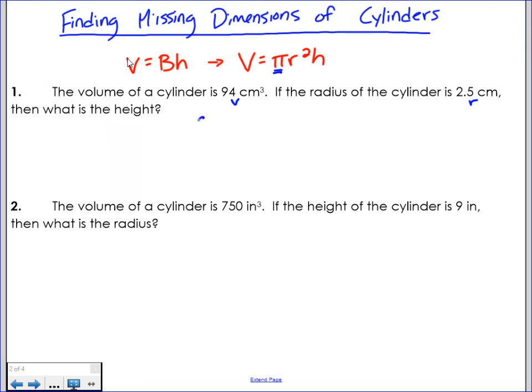Let's fill in everything that we know. I know the volume of the cylinder is 94. I know that pi is 3.14. I know the radius in this case is 2.5, so the formula says that I have the radius squared. I don't know the height.